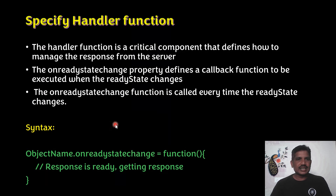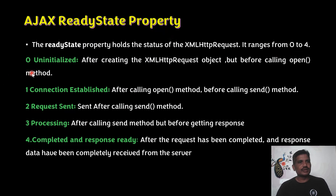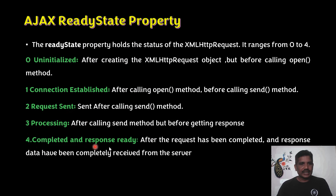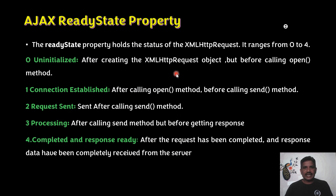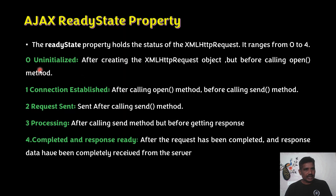The third step is the Ajax readyState property. This property holds the status of the XMLHttpRequest and ranges from 0 to 4. 0 means initialized, 1 means connection establishment, 2 means request sent, 3 means processing, 4 means completed — response is ready. After creating the XMLHttpRequest object but before invoking the open method, the readyState value becomes 0.